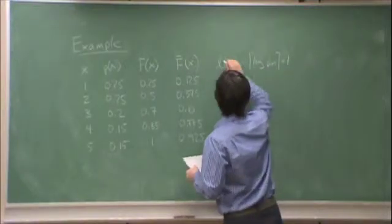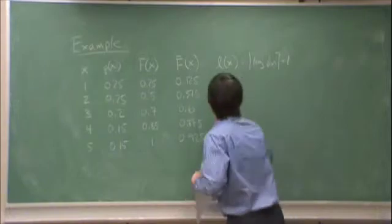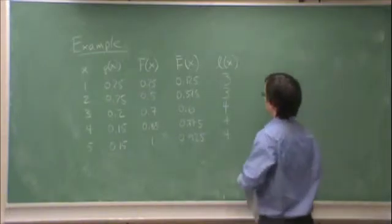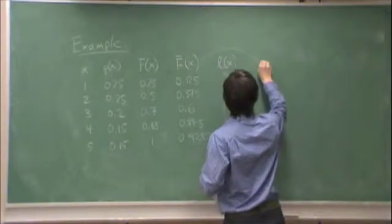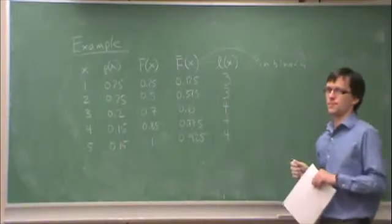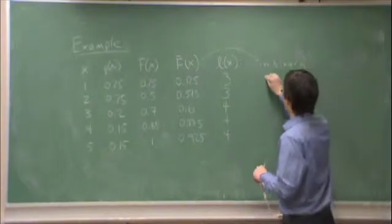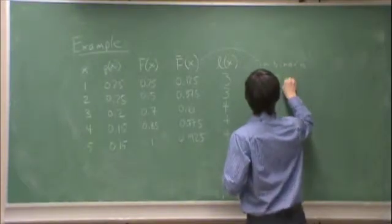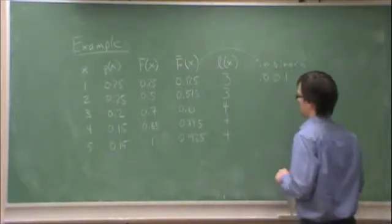So f(x) in binary - what's 0.125 in binary? 0.01. And I need 3 bits, so that's perfect.